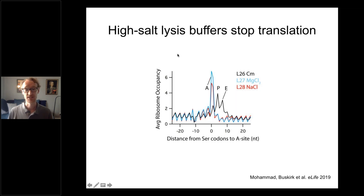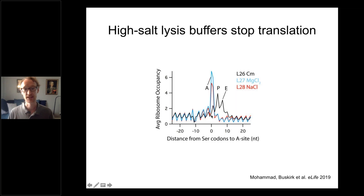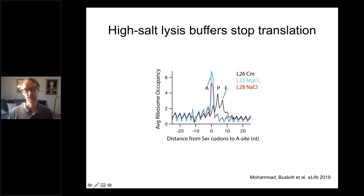We know ribosomes pause when decoding serine codons, so we should see a pause when serine codons are in the ribosomal A site. In a metacodon plot with serine codons at zero, high-salt buffers with high magnesium or sodium chloride show a single strong peak representing a ribosome with a serine codon in the A site. With the old chloramphenicol-containing buffer, the signal spreads out because translation isn't completely stopped in vitro. Using high-salt buffers gives much better resolution for looking at ribosome pauses.